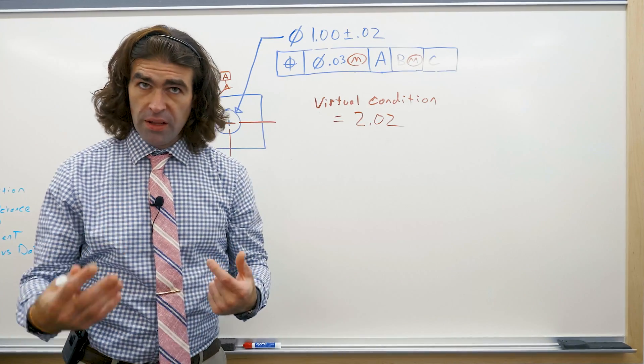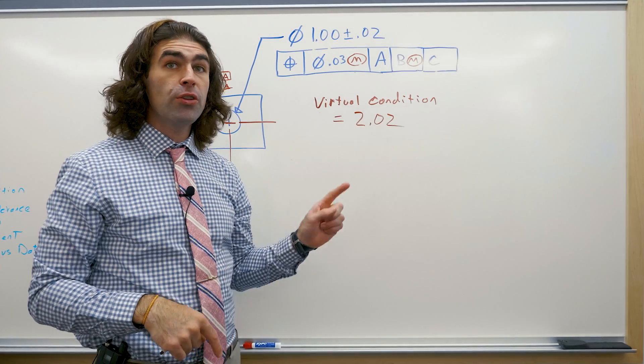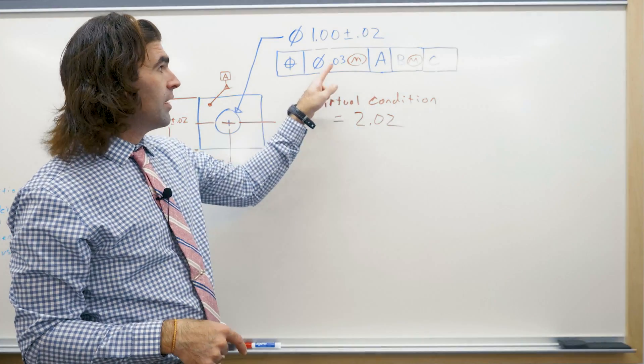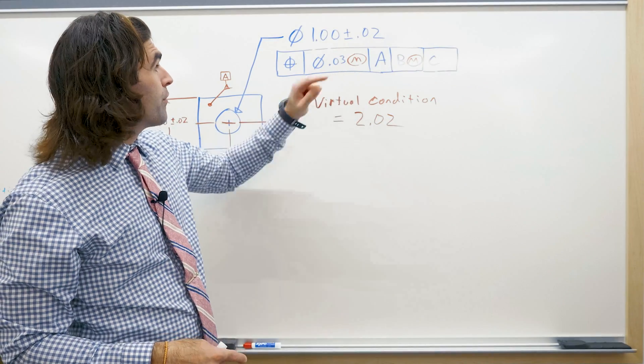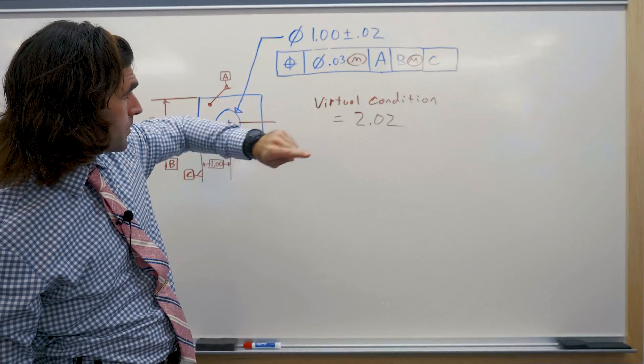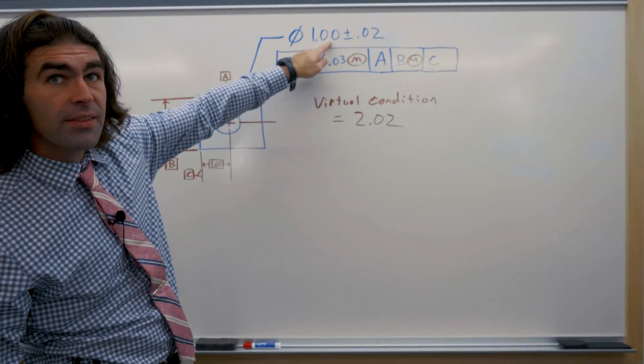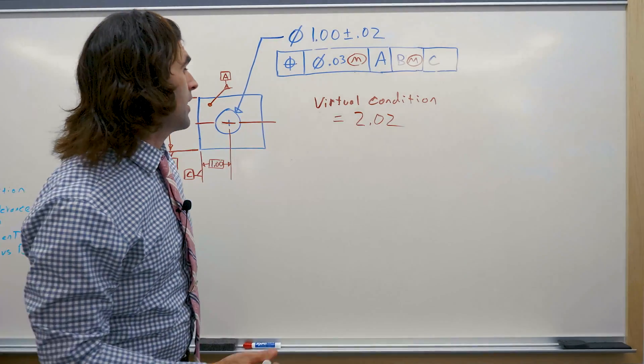So another way datum shift comes up, since this has an MMC as well you can simulate you can check this with the virtual condition of the actual feature. So the virtual condition of this feature is the smallest size. So the MMC minus the position.